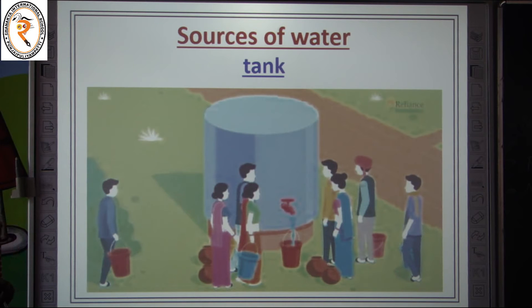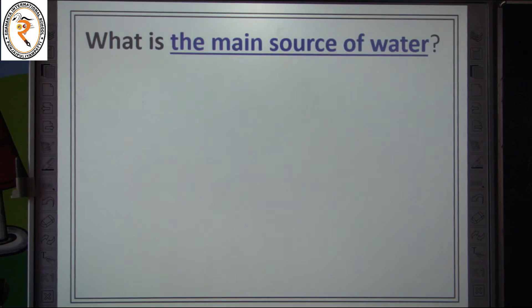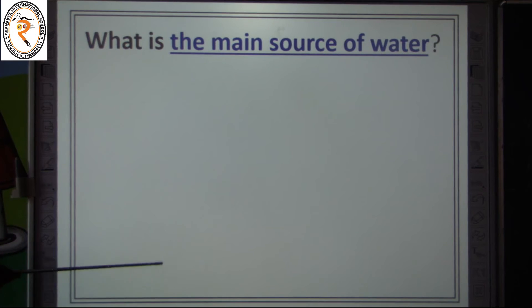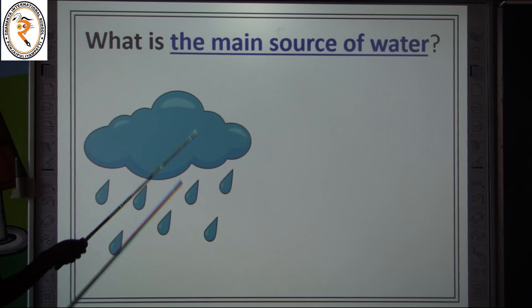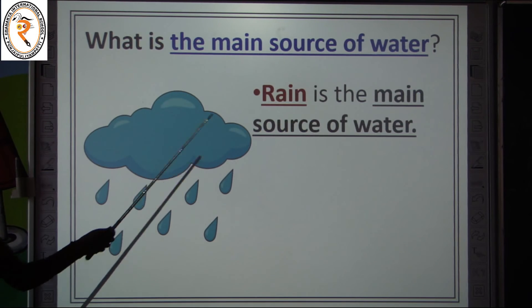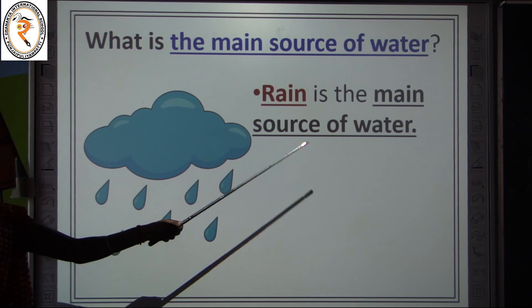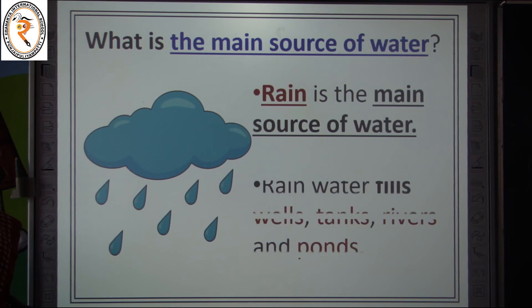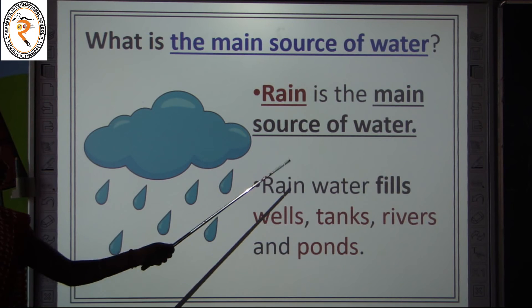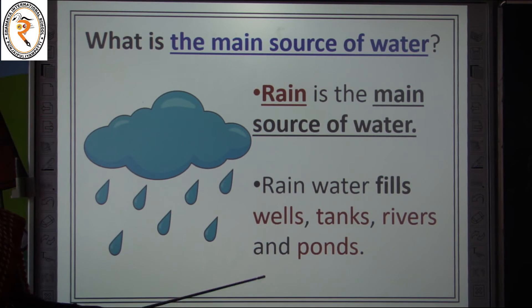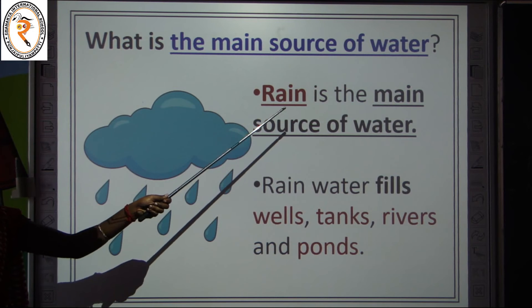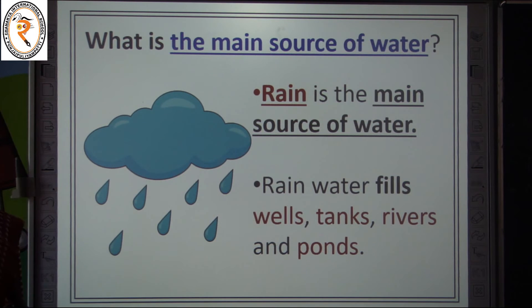What is the main source of water? Rain is the main source of water because rain water fills wells, tanks, rivers, and ponds. That's why rain is called the main source of water.